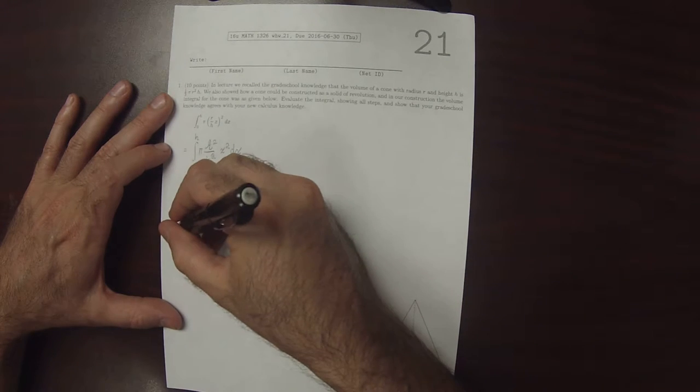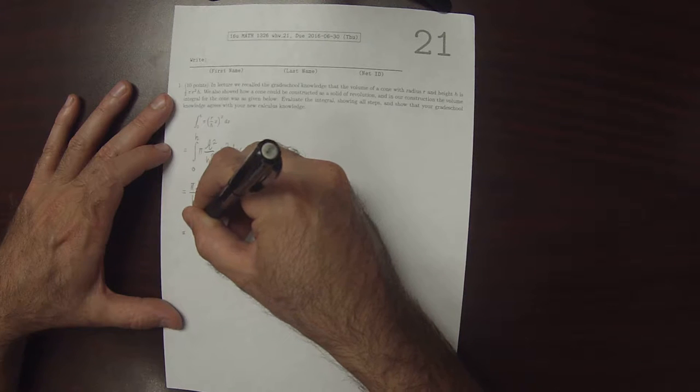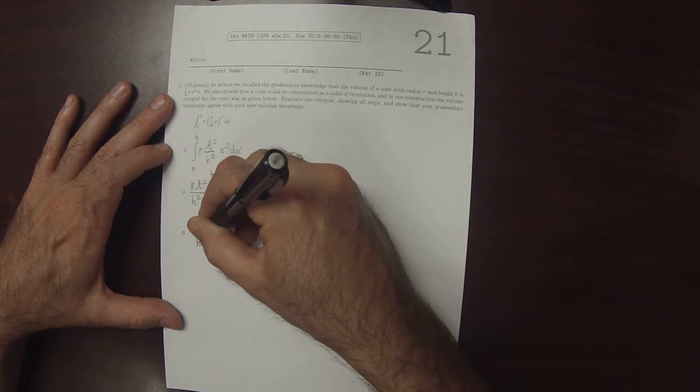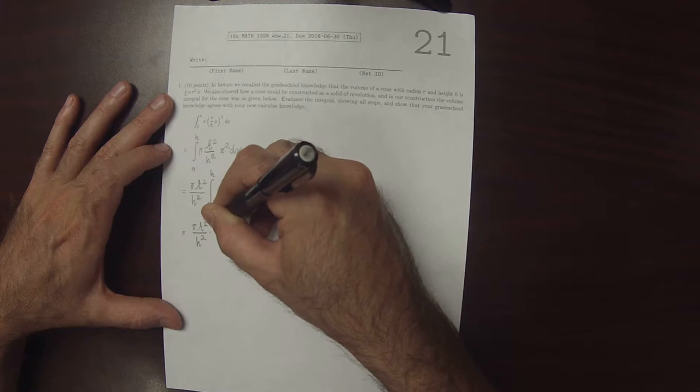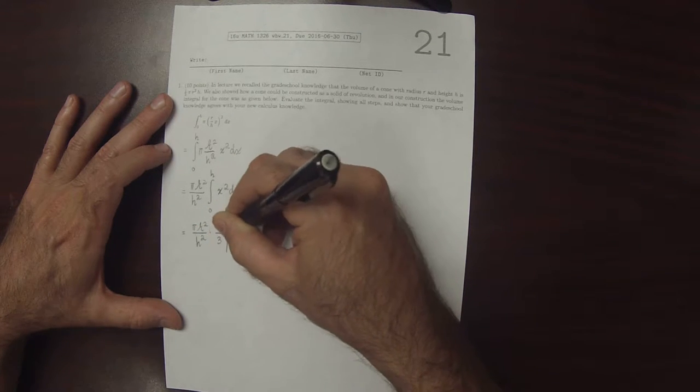And then we can use the power rule. So pi r squared over h squared, multiplied by x to the 3, divide by 3. Evaluate from 0 to h.